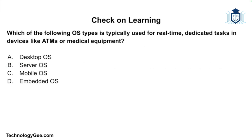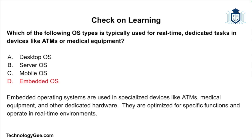Final question: which operating system type is used for real-time dedicated tasks in devices like ATMs or medical equipment? Is it a desktop, server, mobile, or embedded operating system? The correct answer is an embedded operating system. Embedded operating systems are used in specialized devices like ATMs and medical equipment. They are optimized for specific functions and operate in real-time environments.